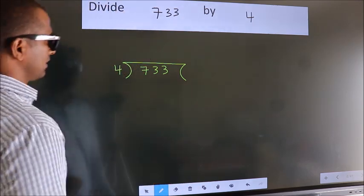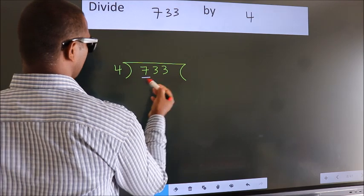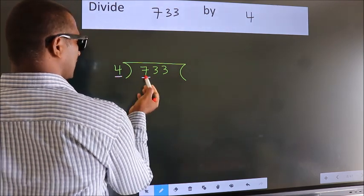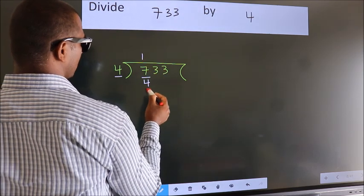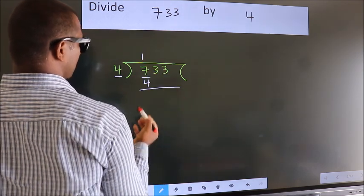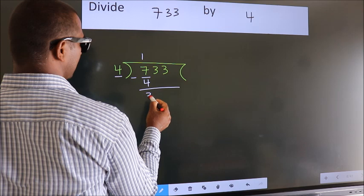Next, here we have 7, here 4. A number close to 7 in the 4 table is 4 times 1 is 4. Now we should subtract. We get 3.